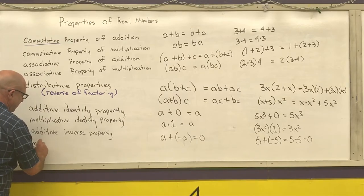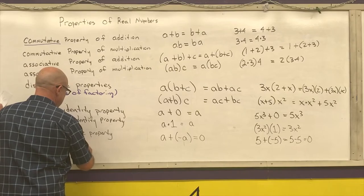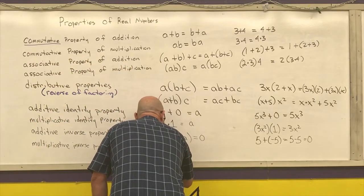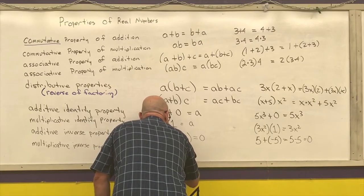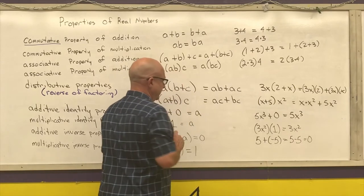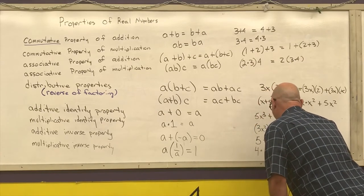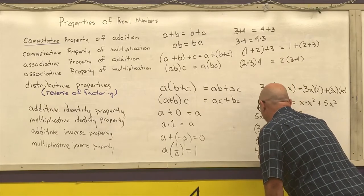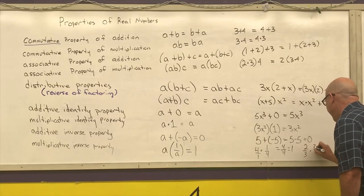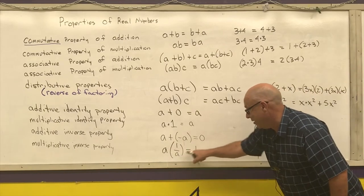My last property is the multiplicative inverse. It says any number times its reciprocal is equal to 1. The reciprocal is just 1 over that number, or that number flipped over. For example, 4 times 1/4, that's 4/1 times 1/4 equals 4/4, which is 1. Do it with another fraction: 2/3 times 3/2 is 6/6. Any number divided by itself is 1.